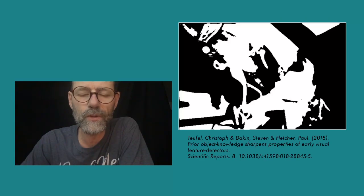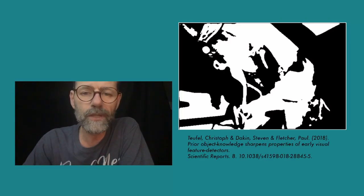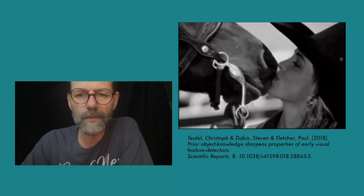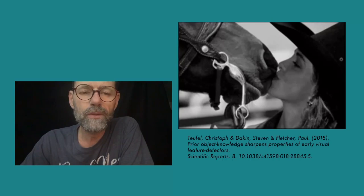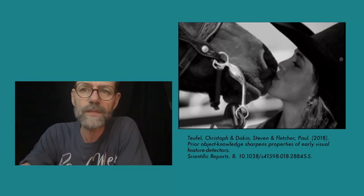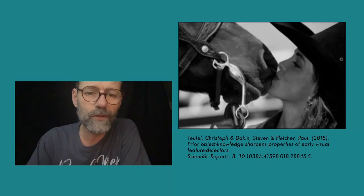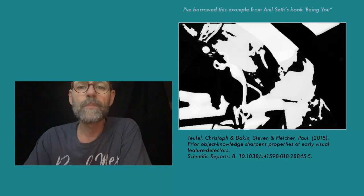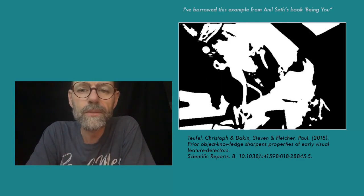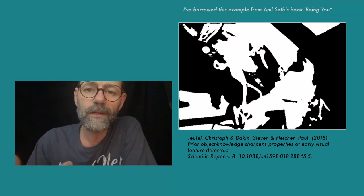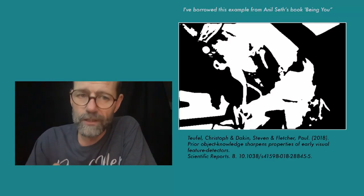It's a so-called two-tone image. You can feel free to pause the video. Does this make sense? Probably not, right? Now please observe this next image. You can pause again. This time the image should make sense. You see a girl and a horse, correct? Now go back to the first image and take a look again. Does this image now make sense? Do you see the same girl and the horse? I guess so.